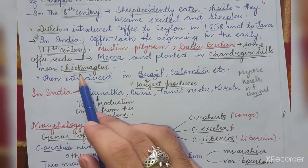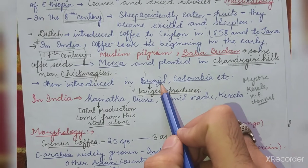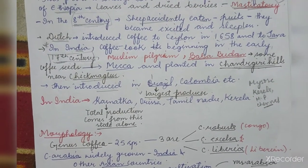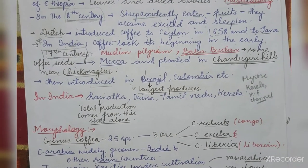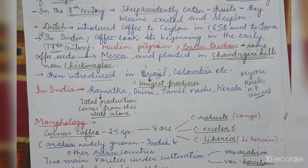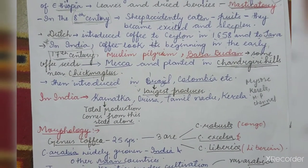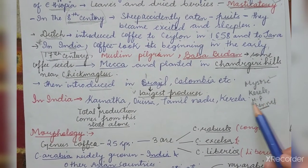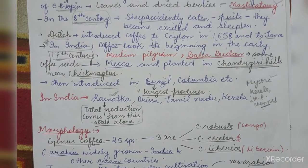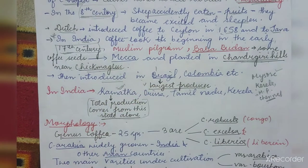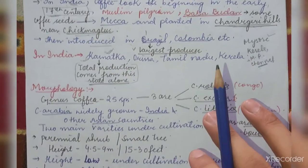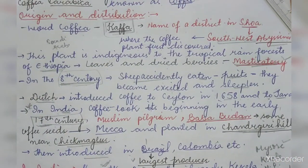After India, the coffee plant was also introduced to other countries like Brazil and Colombia. Brazil is the largest producer of coffee in the world. In India, Karnataka is the largest producer of coffee, and the total production from India comes largely from this state alone.